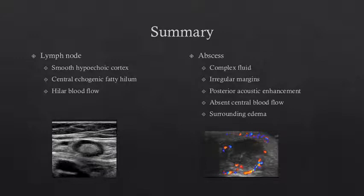In summary, a normal lymph node has a smooth hypoechoic cortex, central echogenic fatty hilum, and hilar blood flow. An abscess is a complex fluid collection with irregular margins that demonstrates posterior acoustic enhancement, no central blood flow, and surrounding edema.